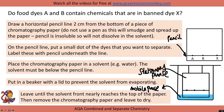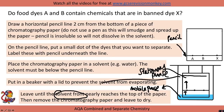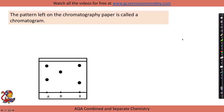As it moves up the paper, the solvent travels upward and when it hits the dyes it dissolves any soluble compounds, which are then carried up in the mobile phase. Depending on their solubility, they stop at different distances up the paper. The solvent front is where the solvent finishes as it moves up the paper — when it gets near the top, we remove the paper and leave it to dry. The pattern left on the chromatography paper is called a chromatogram.